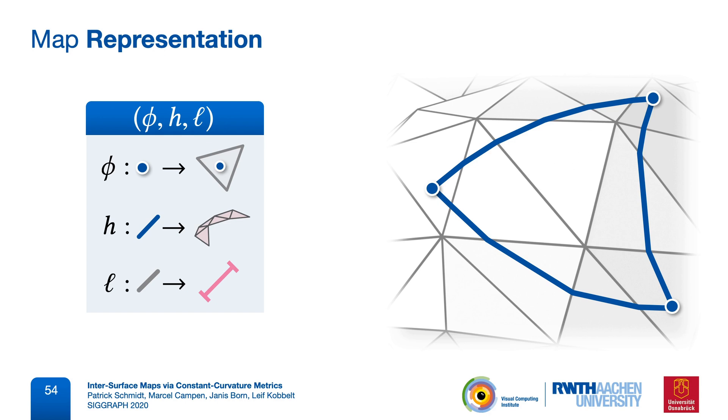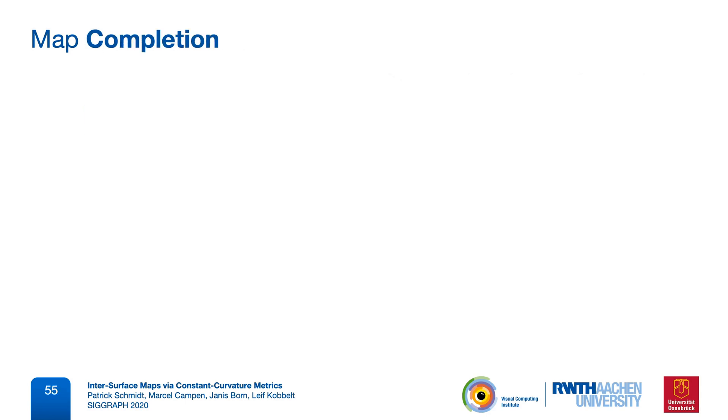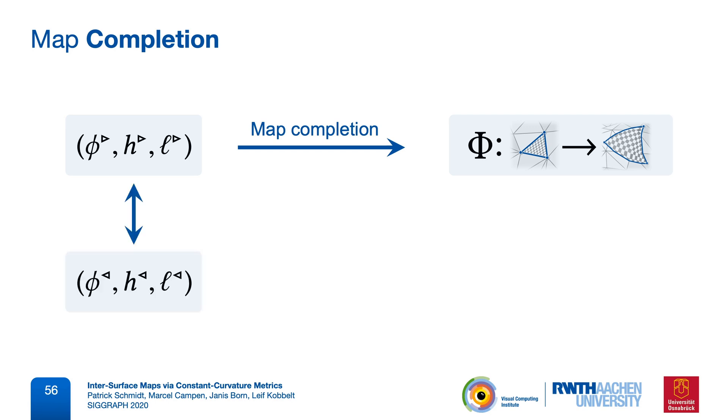To extend the map inside triangles, I will now introduce a map completion operator. It takes such a map representation and computes an explicit piecewise linear map. As the representation already fully defines the map, this operator does not have any parameters. Also note that our representation is directed. It is from a source to a target surface. However, the dense correspondence defined by our map is symmetric. And in the paper, we describe another operator that switches this representation direction, while still describing the same completed map.